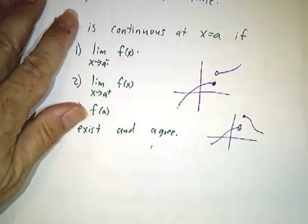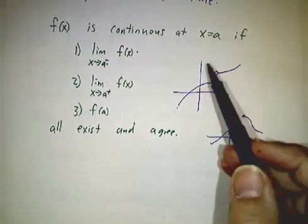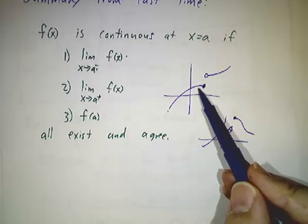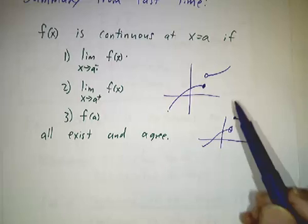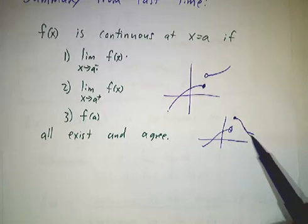Now here are a couple pictures of situations where they don't quite agree. Here the value agrees with the limit from the left. Here the value agrees with the limit from the right.